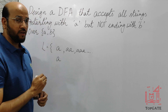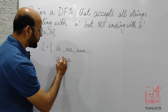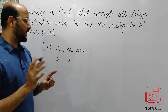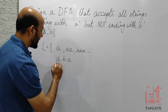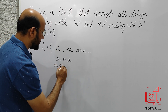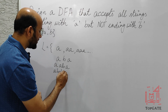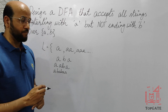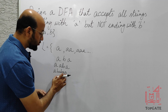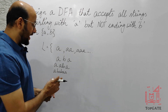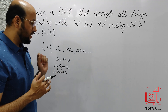Apart from those, the string should start with A and it should end with A. So ending with A, in between we can have any combination of A or B. We can have ABA, AABA, ABABAA, and so on. The only concern is that the string should start with A, it should also end with A, and in between we can have any combination of A or B.